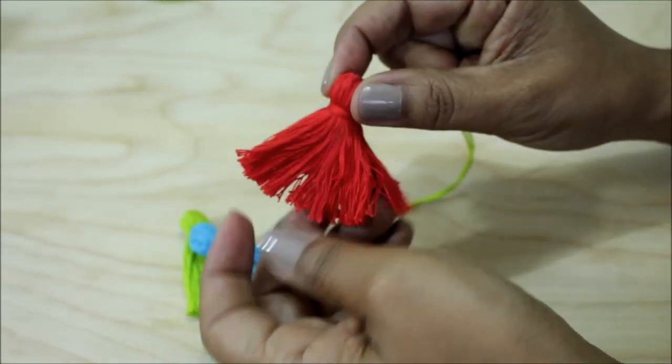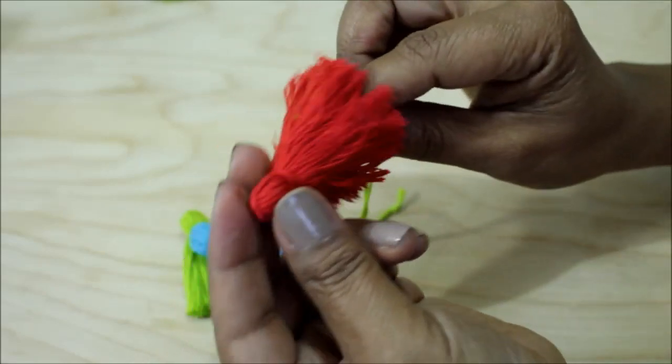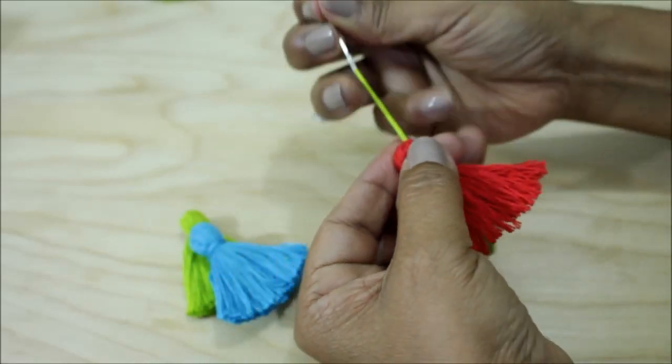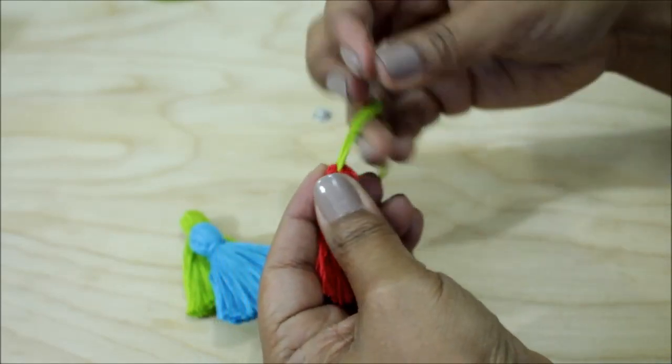I open it up so that I can get to the middle. I feed the needle through it to the little tip of the head and then I make a knot there.